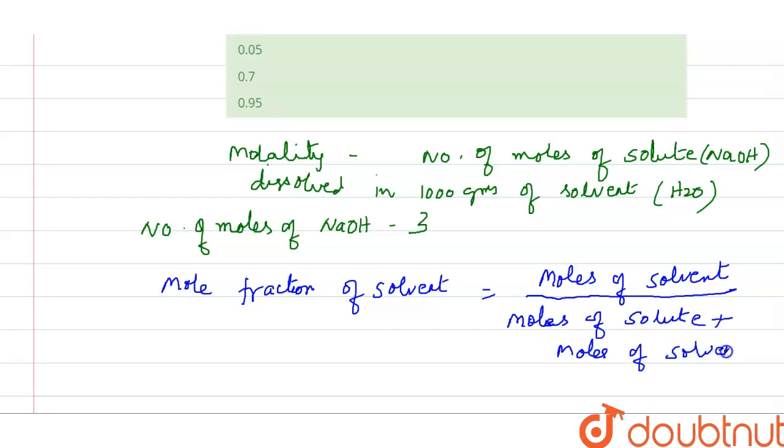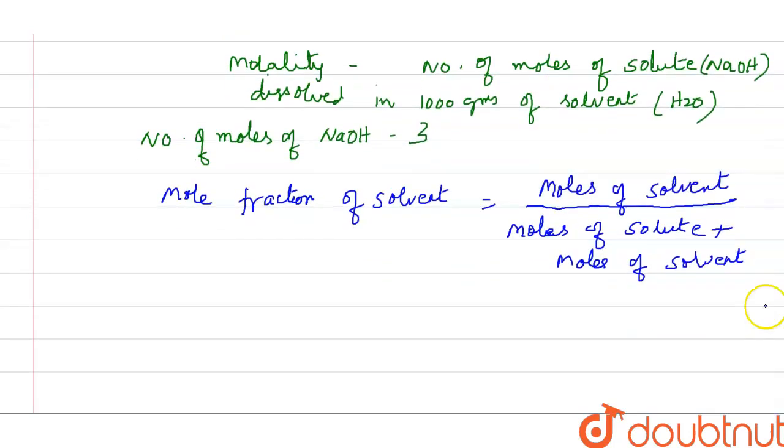Now we will see whether we have the data for all this. Moles of solvent - we know it is 1000 grams of solvent. So how to calculate the moles of solvent? To calculate moles of solvent, that is water, equals given mass by molar mass.